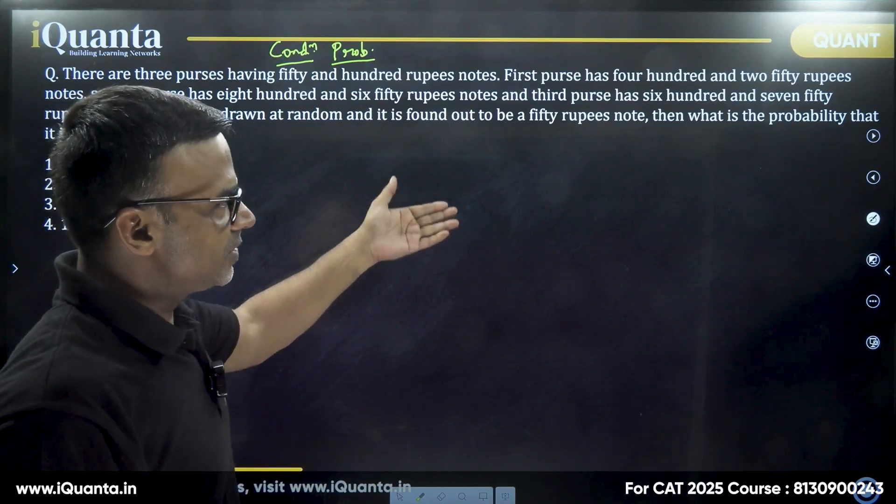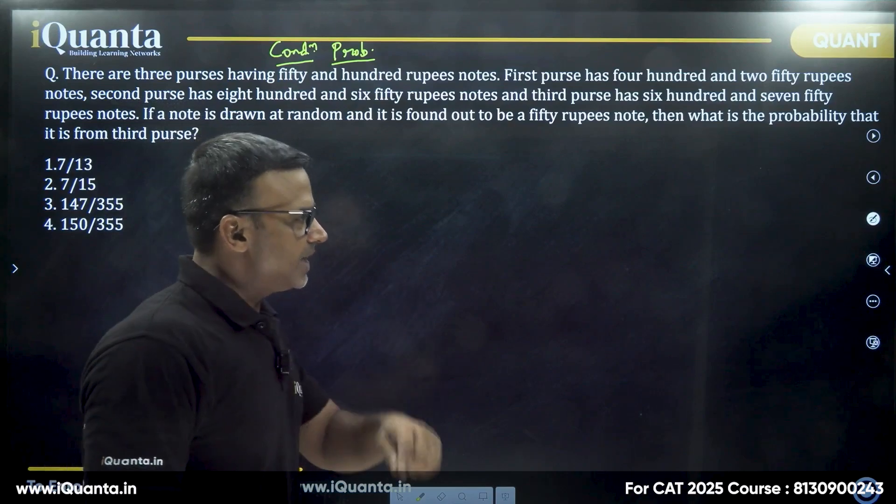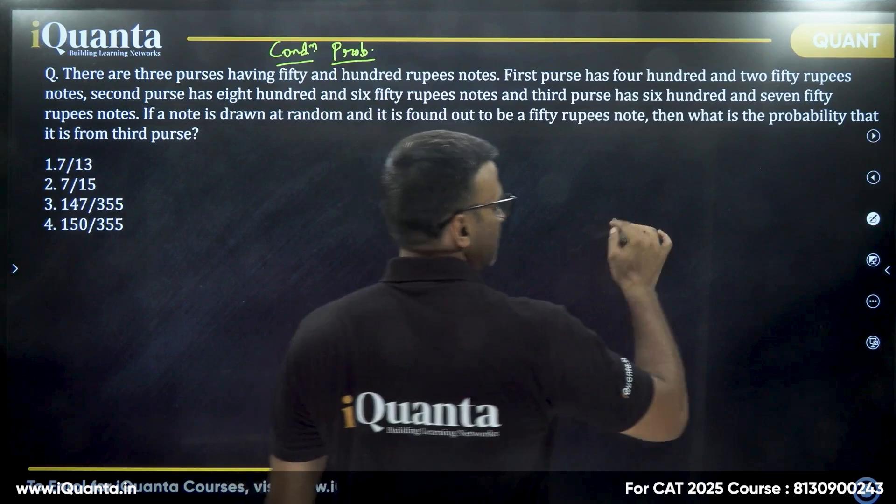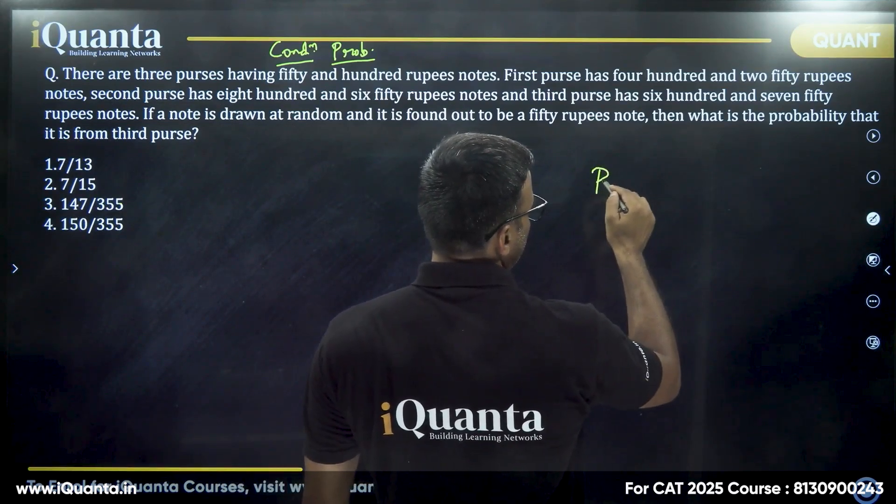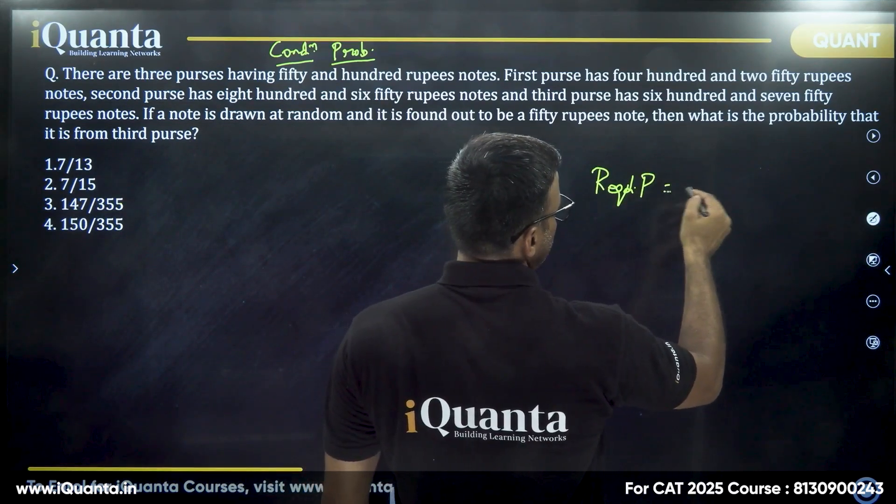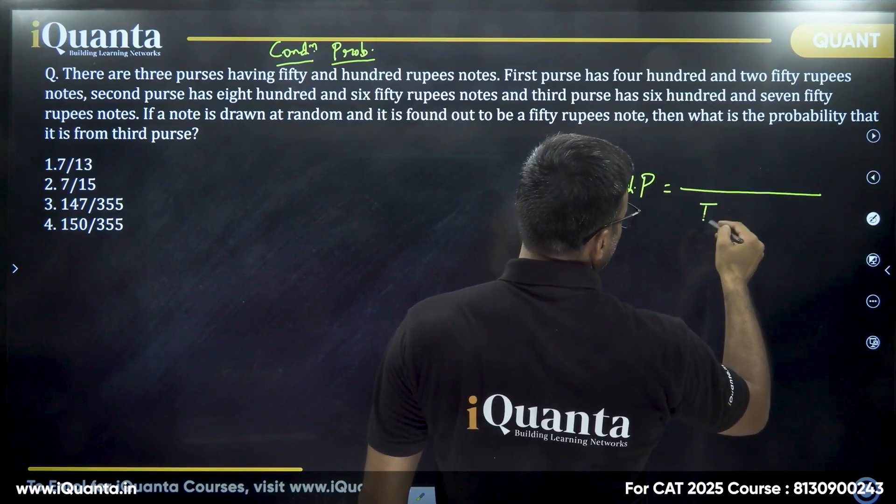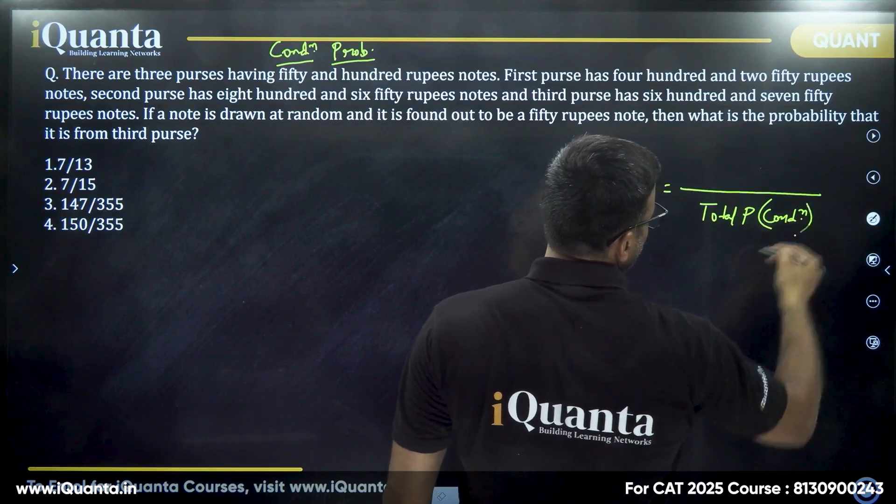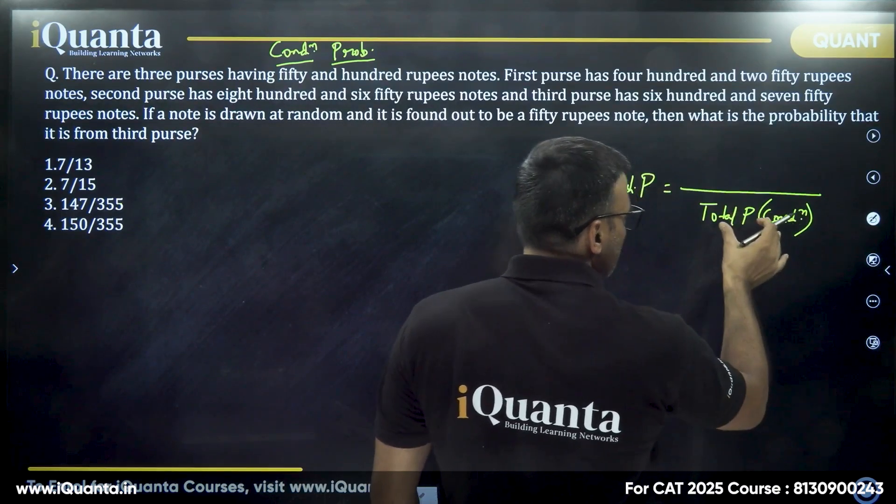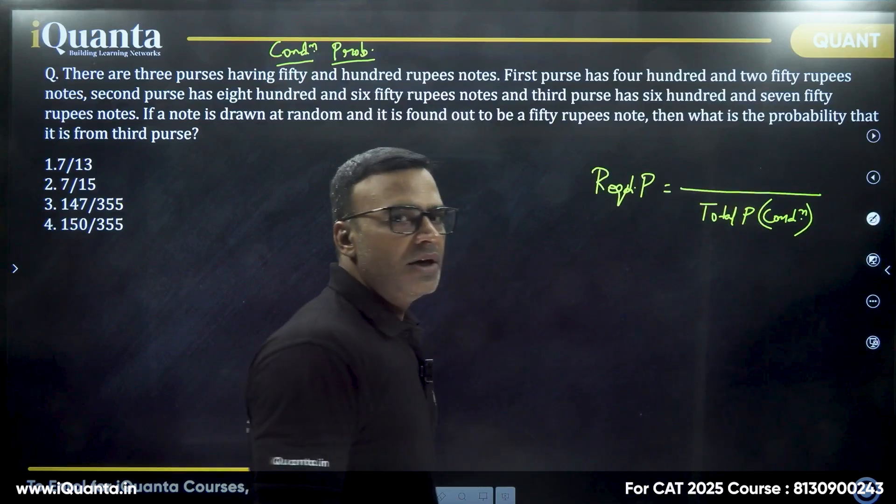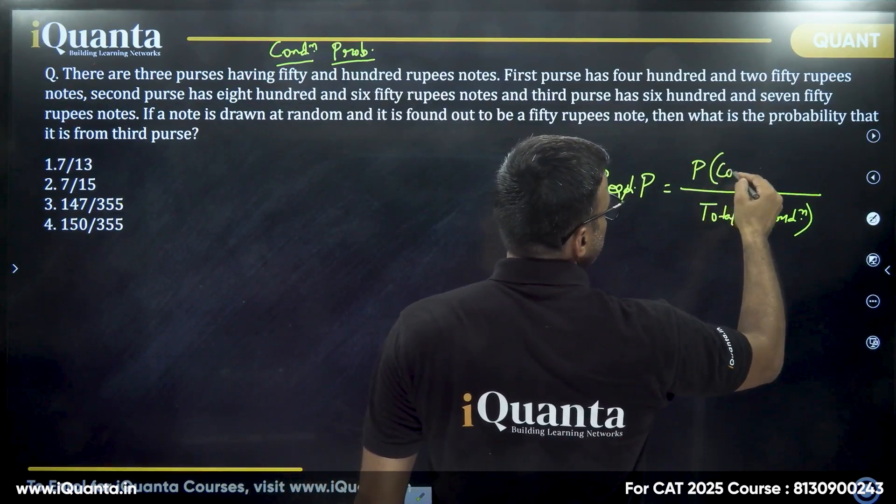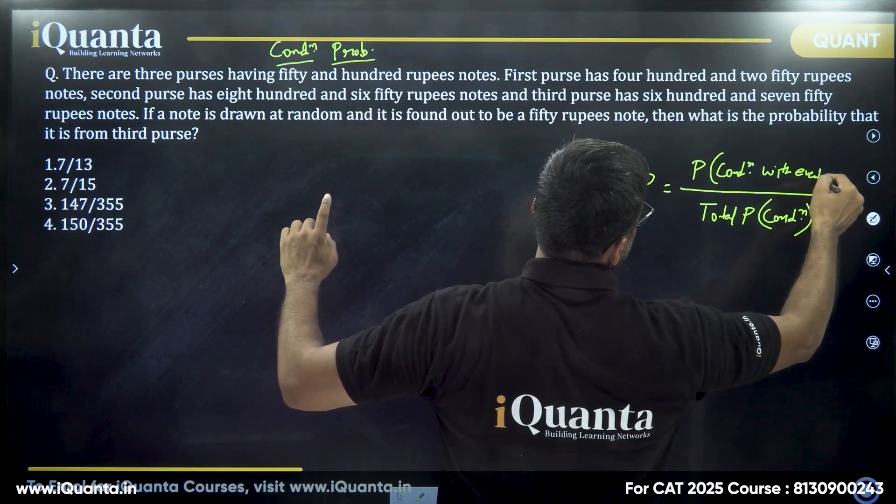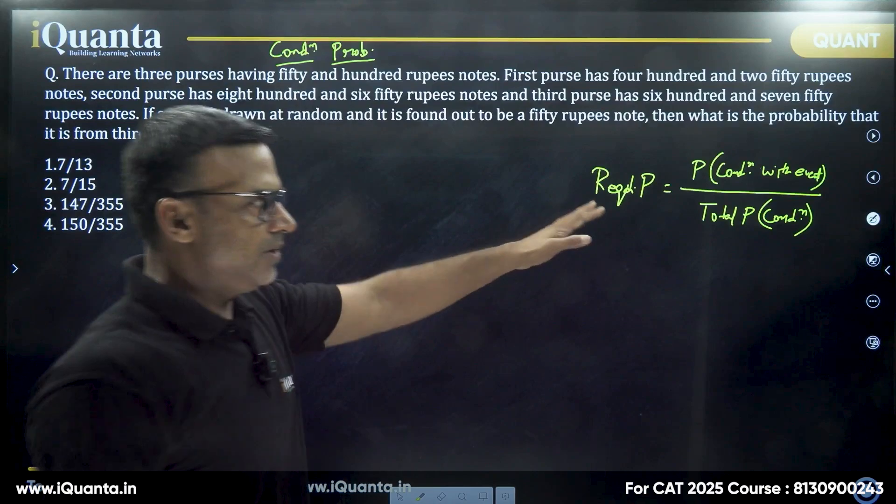So right now because this question is there in front of you, what you should do is study the chapter of probability, study the topic of conditional probability, then come back to this question. Now what do we do for conditional probability questions? The required probability is equal to total probability of condition that comes in denominator. Now this condition can happen in many ways. So one of those ways will be asked and that will be in the numerator. So probability of condition with that given event. This is the process of conditional probability.